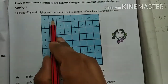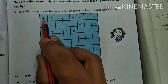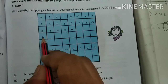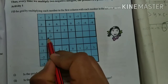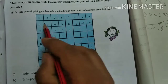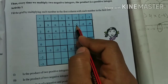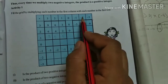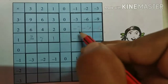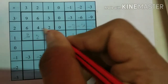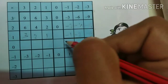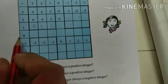Now let's fill the activity grid. Three threes are nine, three twos are six, three ones are three. For three into minus one — one positive, one negative — gives minus three. Two into minus one gives minus two; two twos are four so minus four; two threes are six so minus six. One into minus one gives minus one; one two is two; one three is three — all with negative signs applied appropriately.